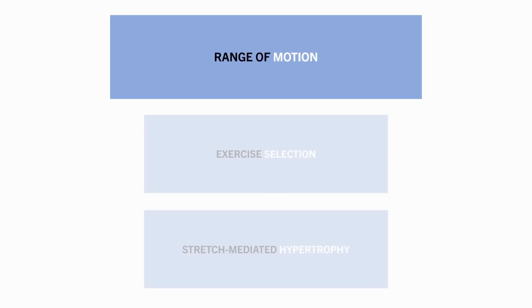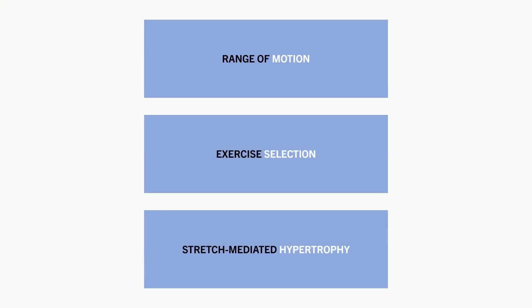Next, let's look at how exercise selection can influence muscle length and what this means for hypertrophy. Essentially, exercises which train a muscle at longer lengths tend to produce superior growth compared with exercises that train the same muscle at a shorter length, with all else being equal.